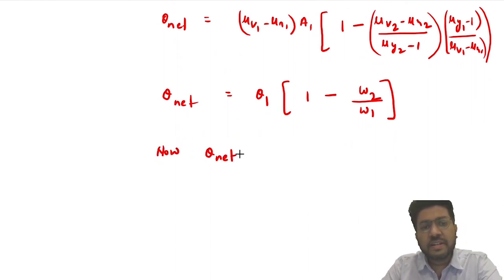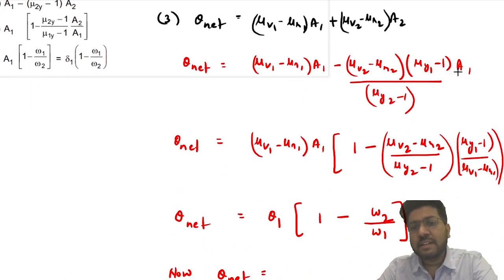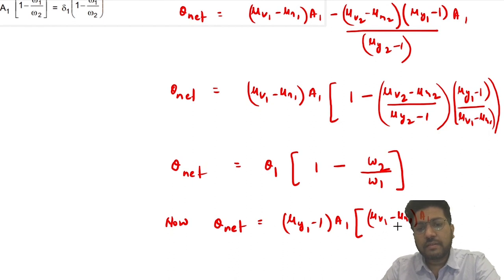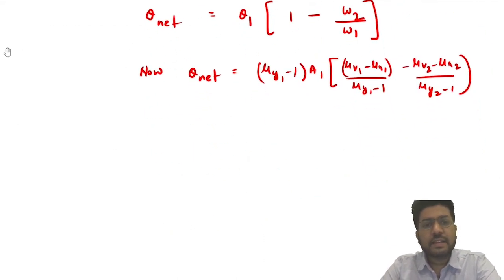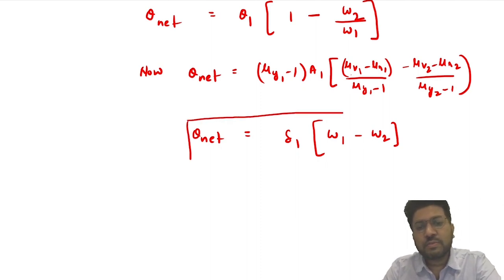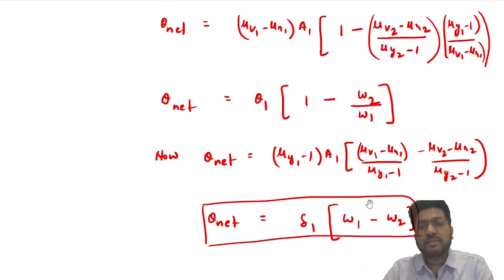Theta_net can also be written by taking μ_y1 − 1)·A₁ as common: δ₁·[ω₁ − ω₂]. So θ_net = δ₁·(ω₁ − ω₂). These are two ways of writing the net angular dispersion. In the option, they can give you θ_net in terms of either form.